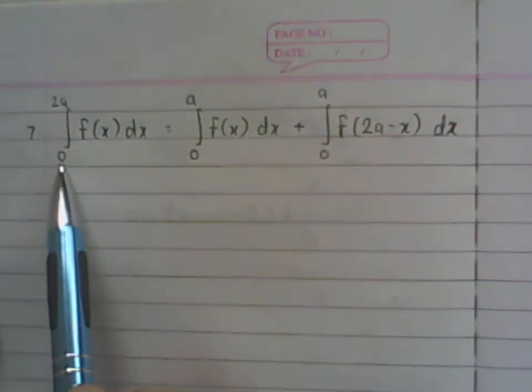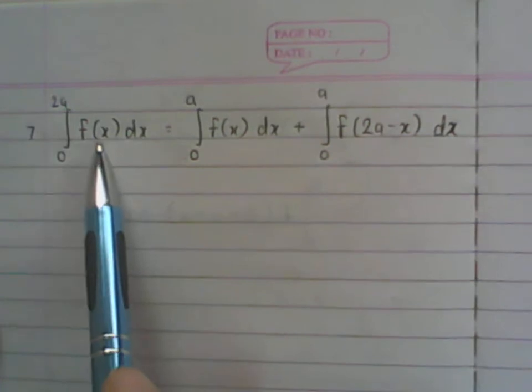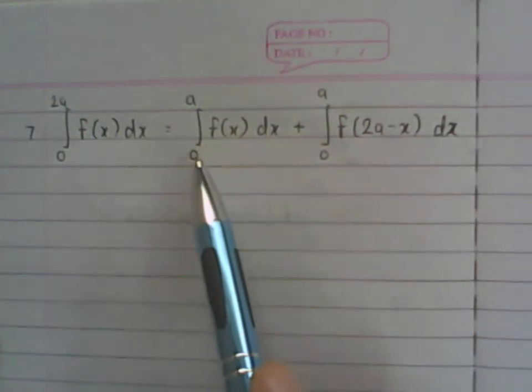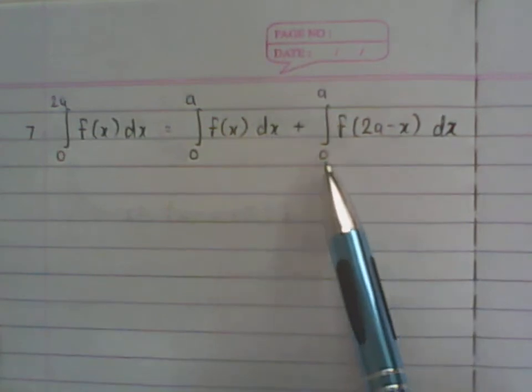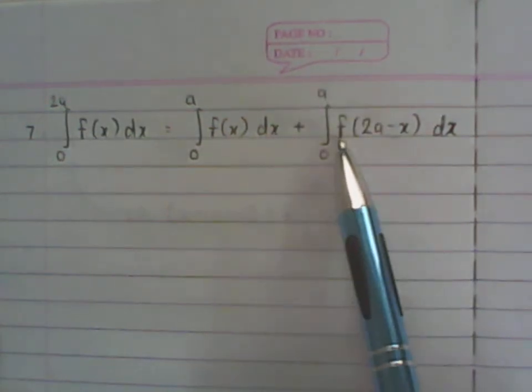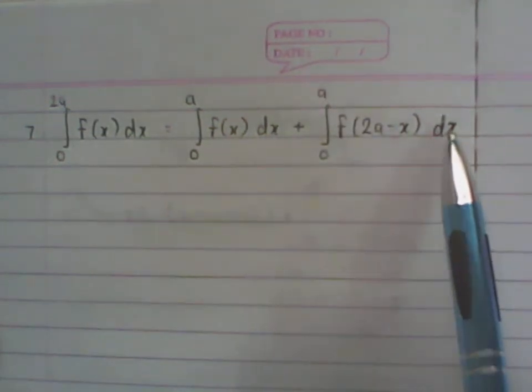The next property says that the definite integral from 0 to 2a of f(x)dx is the same as the definite integral from 0 to a of f(x)dx plus the definite integral from 0 to a of f(2a - x)dx.